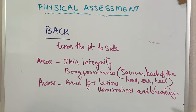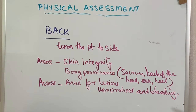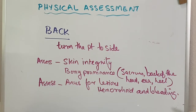John, can you please walk in a straight line? When you assess the back, always turn the patient to the side and assess the skin for integrity — any wound, cut, scar, bruise, lesion, discoloration, petechiae, reddish patches, sign of infection, or fungal infection. Always check the bony prominences: sacrum, back of the heel, back of the head, and ear for pressure ulcers. Assess the anus for lesions, hemorrhoids, and bleeding.